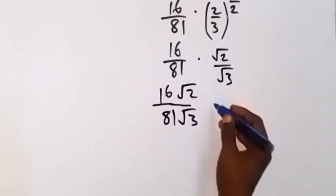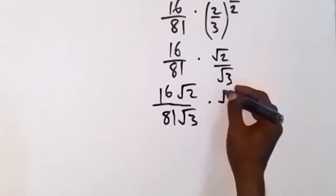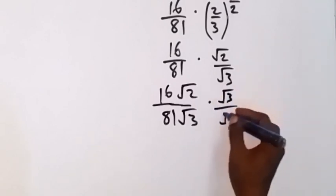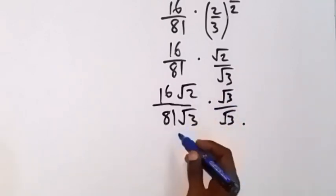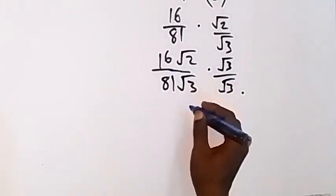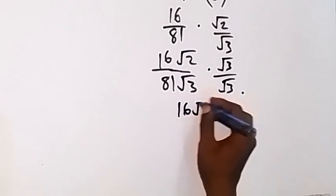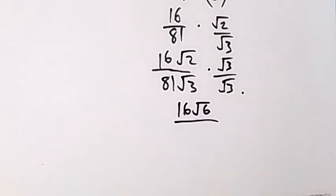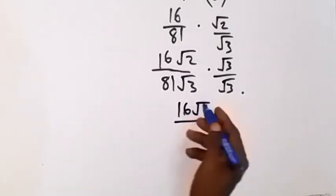And then now we can rationalize this by multiplying with root 3 and divide with root 3, so that's rationalizing the denominator. And by the time we multiply it now, we have 16 root 6 divided by, you know, this is root 3 times root 3, that's 3, that's 81 times 3.